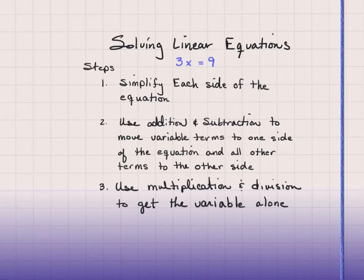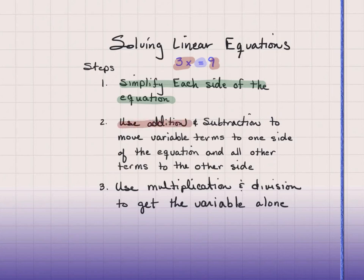Step one: equations have equal signs with a left side and a right side. Step one is always simplify each side of the equation — clean up the left side like it's just an expression, combine like terms, do any distributing, then do the same to the right side. Step two: use addition and subtraction to move variable terms — just numbers, variables, or a product of a number and variable — from one side to the other.